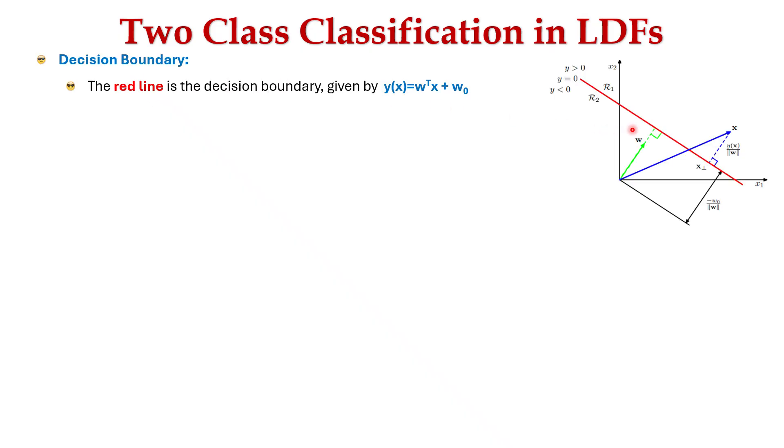Now let's look more closely at the decision boundary itself based on this diagram. Here the red line is the decision boundary given by the function y(x). It separates the input space into two regions: R1 where y(x) > 0, and R2 where y(x) < 0. The line itself is where the class R is undecided.